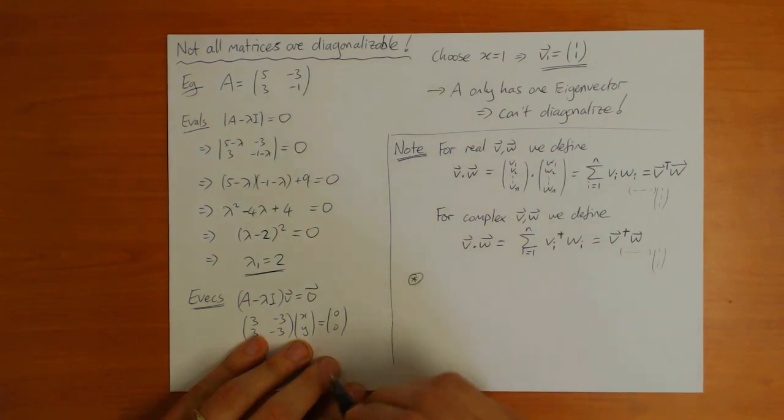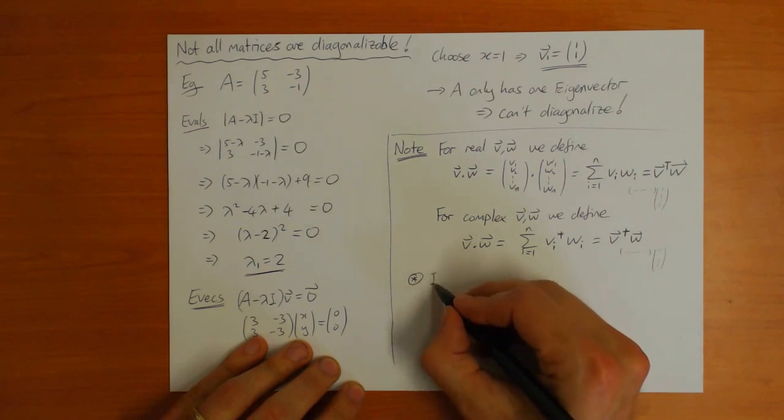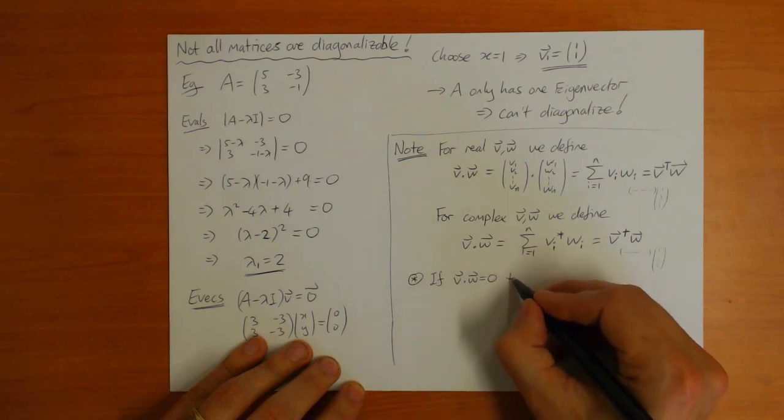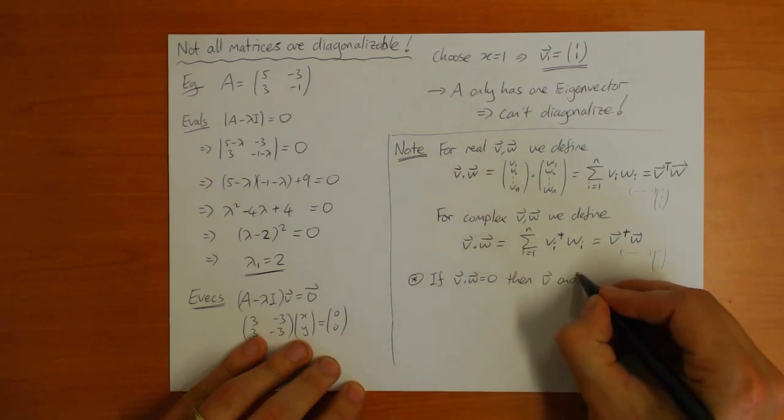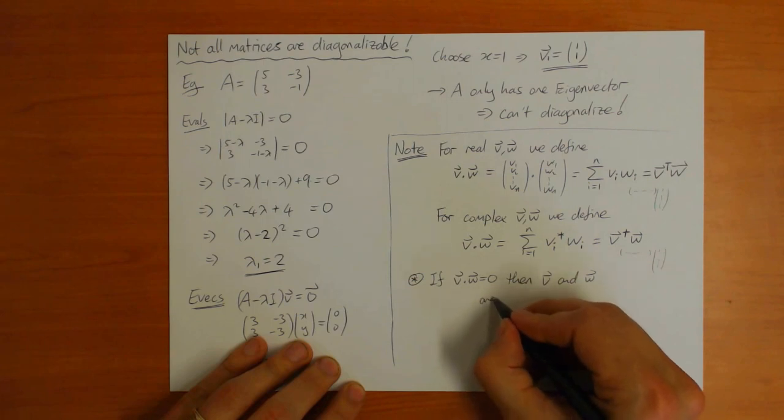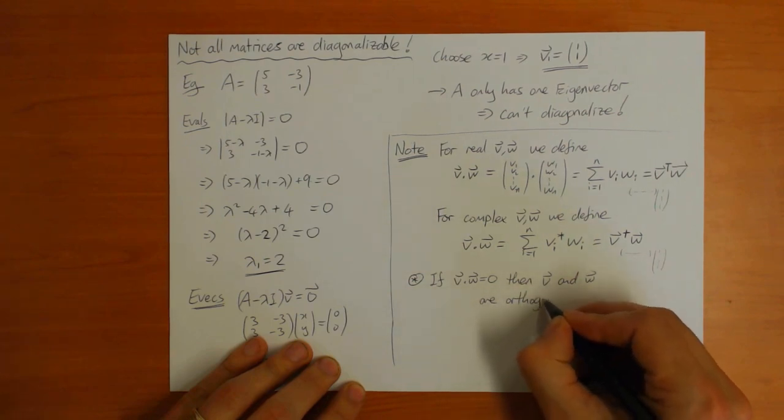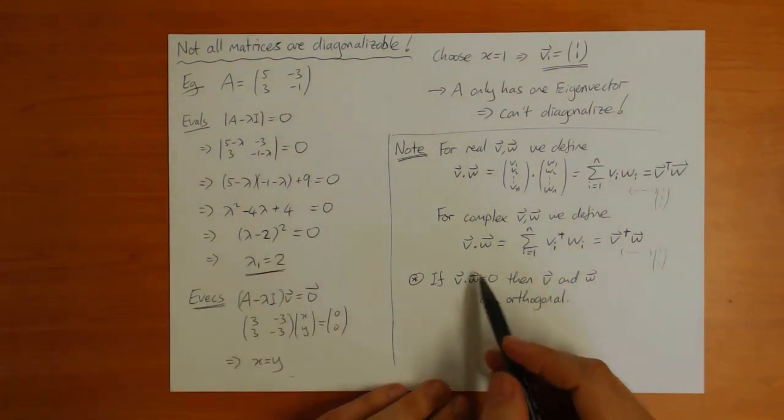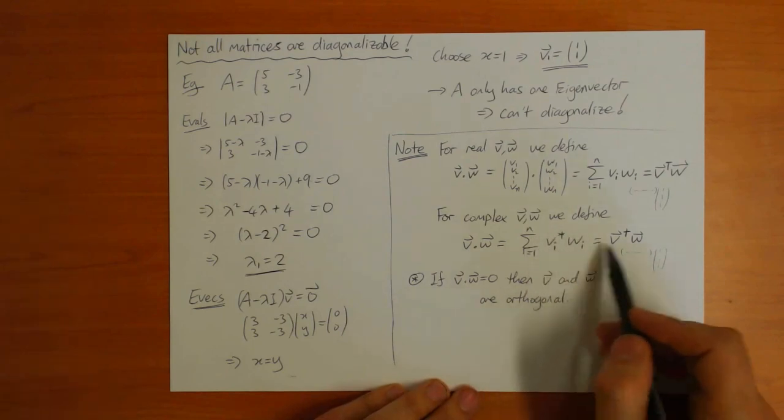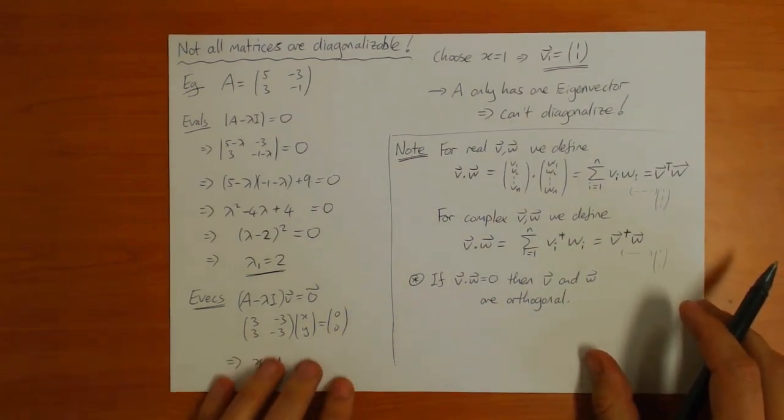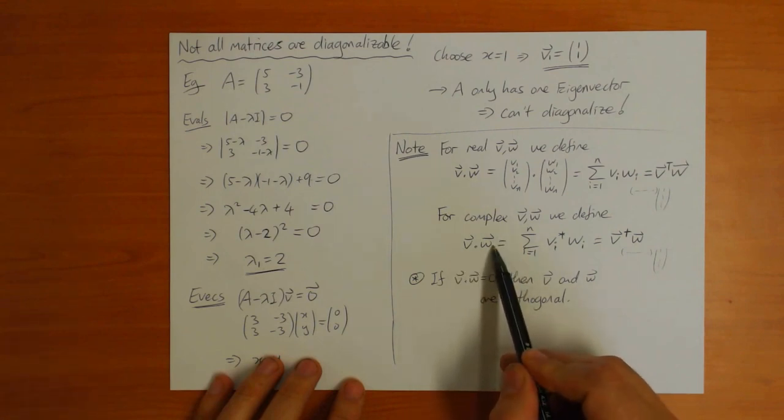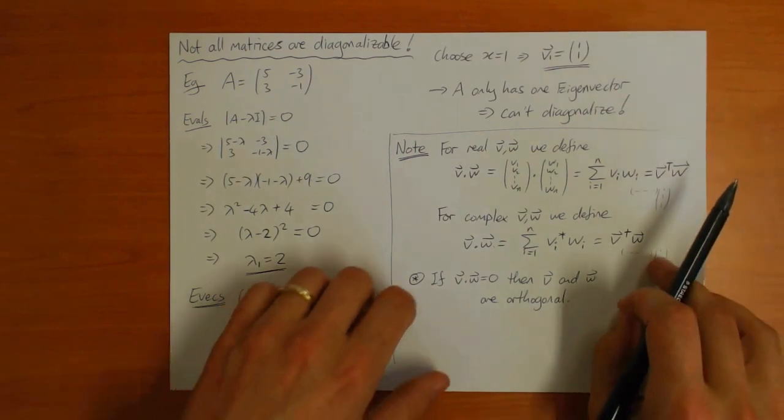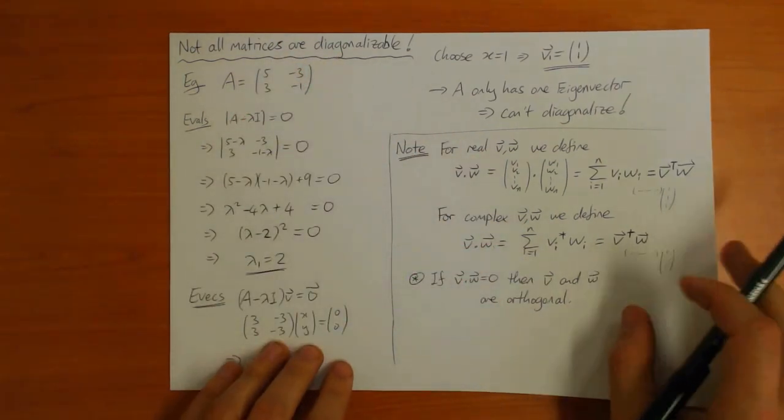This is how we define the scalar product for complex vectors. The definition I've already made for real vectors applies for complex vectors too. Namely, if V dot W equals zero, then we say V and W are orthogonal. For real vectors, this means 90 degrees angle. For complex vectors, it doesn't mean that because of the complex conjugate there.